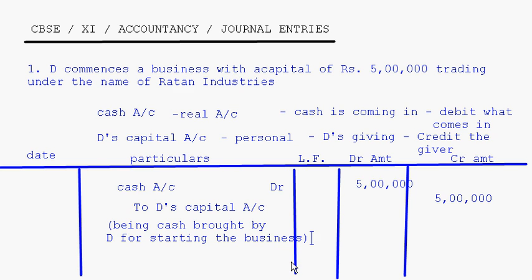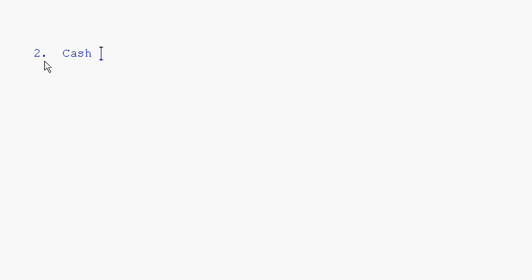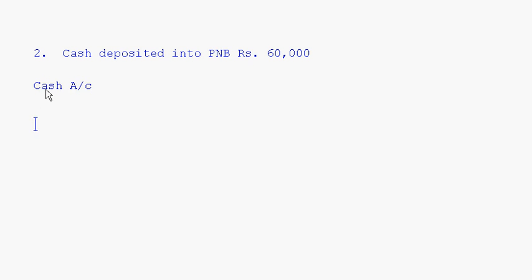Now let's look at one more entry. Cash deposited into Punjab National Bank, rupees 60,000. The accounts involved here are cash account and bank account. Cash is being deposited in the bank. Cash is a real account, and bank, as I said, is a personal account.